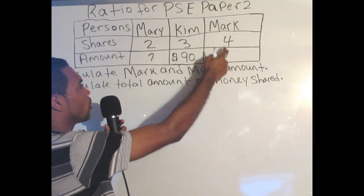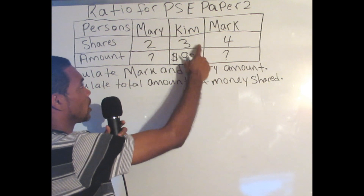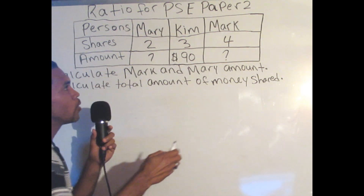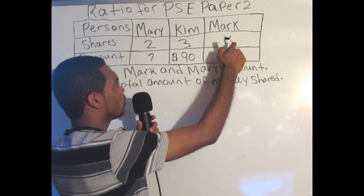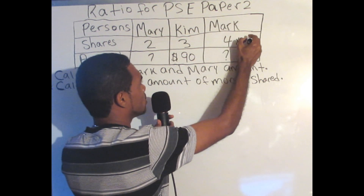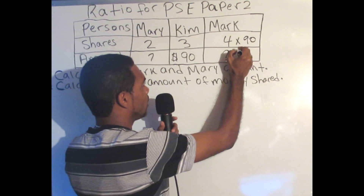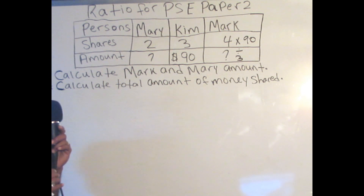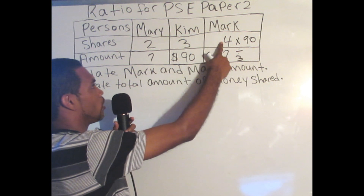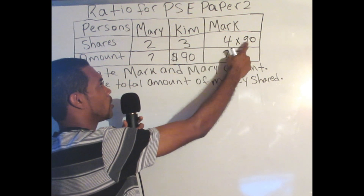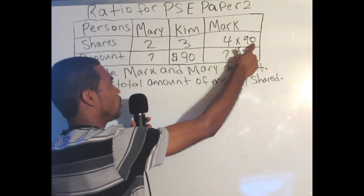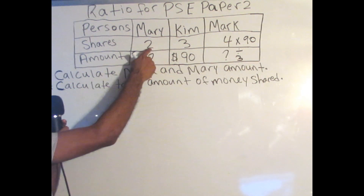Mark is a ratio of 4. How much Mark received we don't know. But what we know is that Kim received $90, and Kim is a ratio of 3. So in order to find how much Mark received, we'll take the ratio of Mark, which is 4, times 90, then divided by 3. We work with what we don't know and use what we know to find Mark's amount. We could also do the same with Mary.